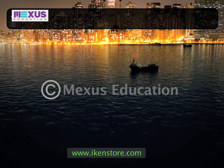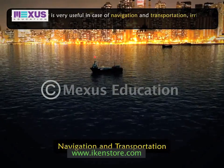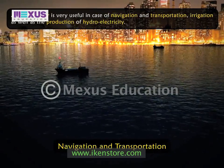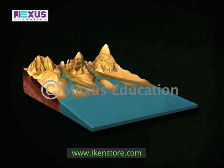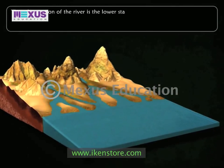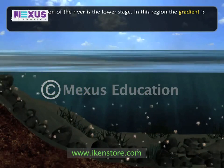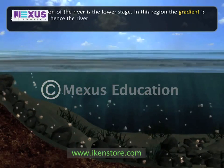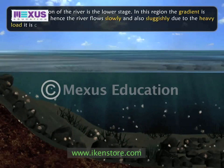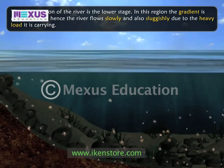A braided river is very useful in case of navigation and transportation, irrigation, as well as in the production of hydroelectricity. The lower stage of the river is a region where the gradient is almost flat, and hence the river flows slowly and sluggishly due to the heavy load it is carrying. Thus, the main work of this region is deposition.